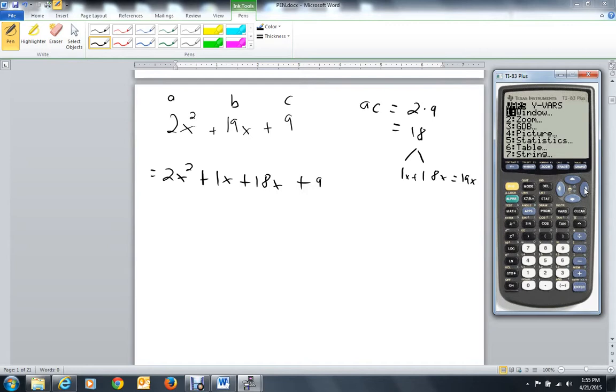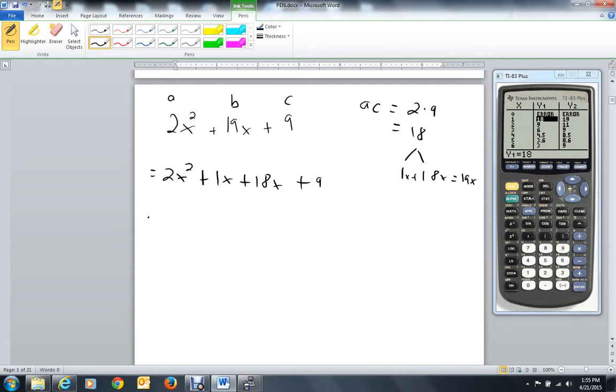I'm going to type in x plus, go to the var key, which is variables, go over to y vars, hit enter. I'm looking for y1. Now I want to look at the table, which is second graph. If I go over to y2, once I find the 19, that's my B, and that means x and y1 are the numbers I'm going to use.